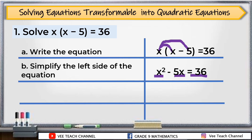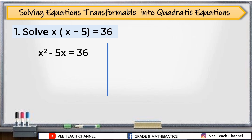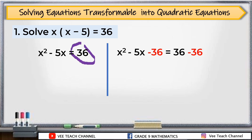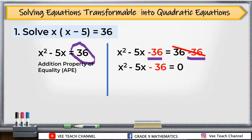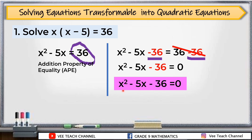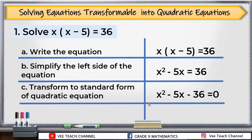After that, we need to transform this equation into standard form. To do that, we make our equation equal to 0. We will subtract 36 from both sides — that is the addition property of equality. So our answer is x squared minus 5x minus 36 equals 0. Our equation is now written in standard form.